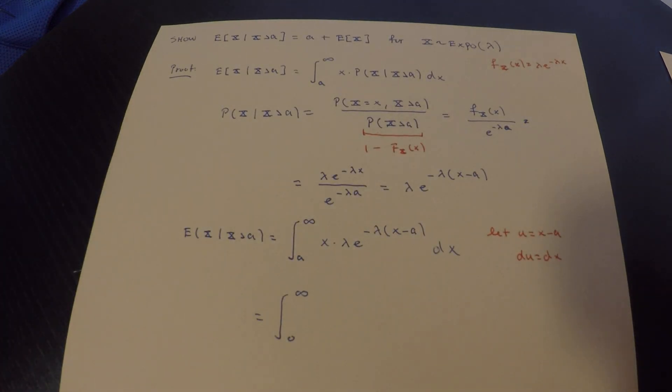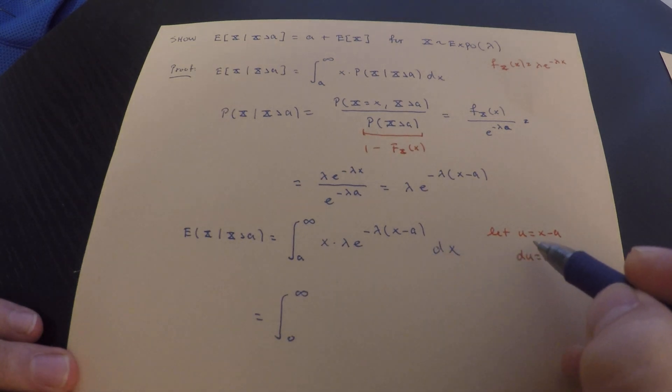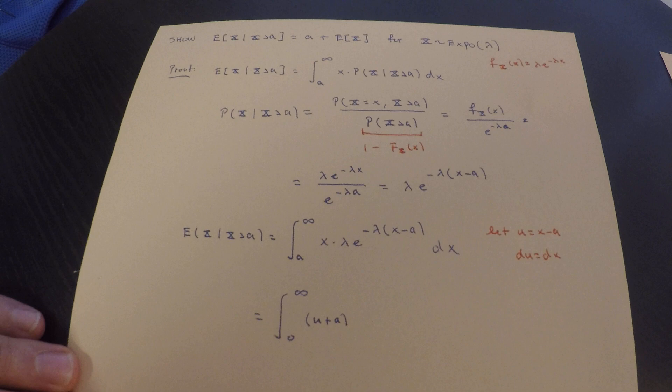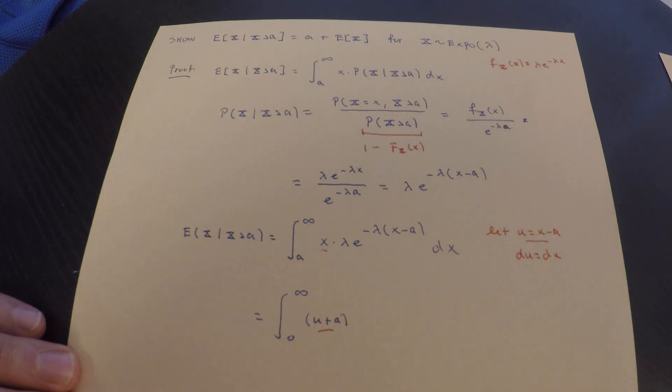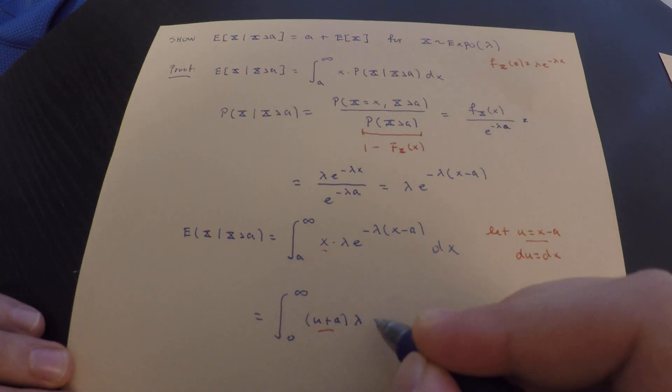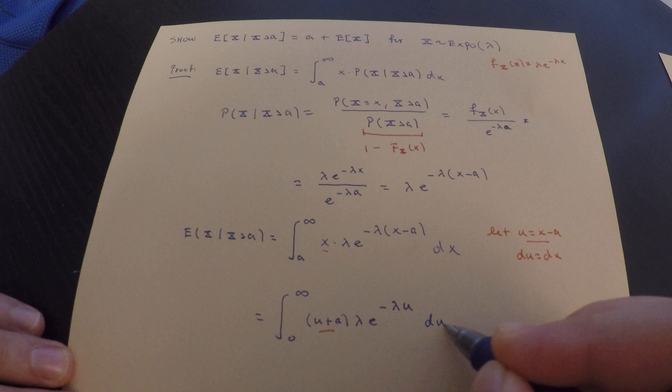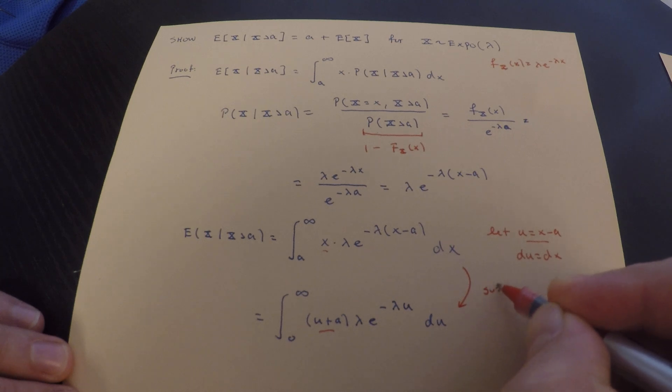And by the way, I'm being hand-wavy. I mean, these are improper integrals. We need to take limits and things like that. But we're glossing over those details because they're so trivial. Now, if u equals x minus a, what does x equal? x equals u plus a. So just to make a substitution there, I've just replaced x with u plus a based off this relationship over here. Nothing crazy going on. Times lambda e to the negative lambda u, du. So substitute. That's all we've done.